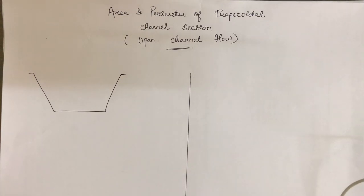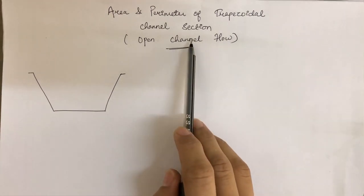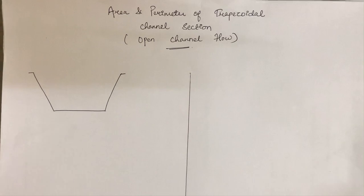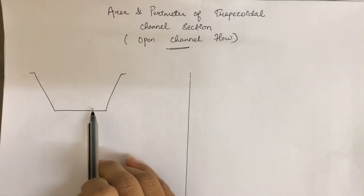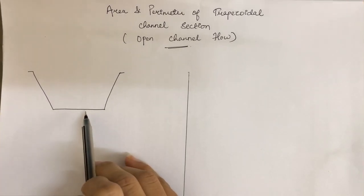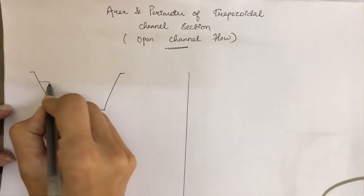Students, today in this video we are going to see how we can calculate the area and perimeter of a trapezoidal channel section, which will be very helpful in the design of the most economical channel section of open channel flow. Here, as you can see, a section of a trapezoidal channel is shown.